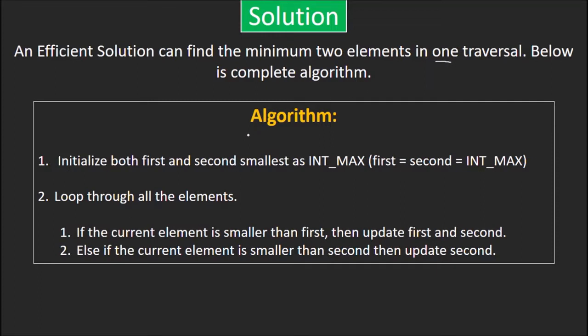The algorithm is stated below. Initially, both the first and second elements have a value infinite. The variables first and second store the first smallest and second smallest element respectively. Now, we traverse through the array. If the current element is smaller than the first, then we set second equal to first because the element which was smallest till now will become the second smallest. Then, we set first equal to current element. In case, the current element is smaller than second but bigger than first, we update second.